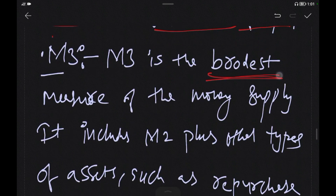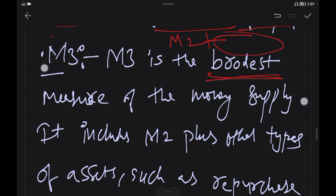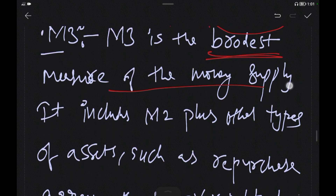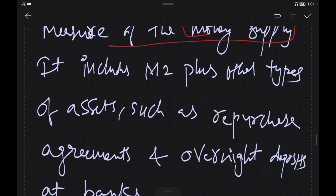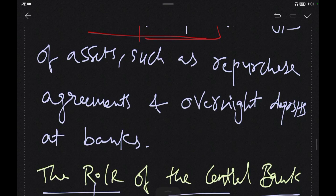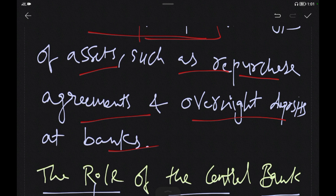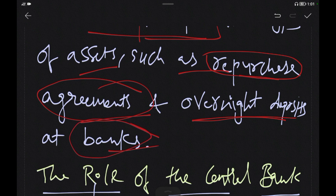M3 is the broadest measure of money supply. It includes M2 plus other types of assets such as repurchase agreements and overnight deposits held at banks. M3 represents the broadest way to measure the money supply.